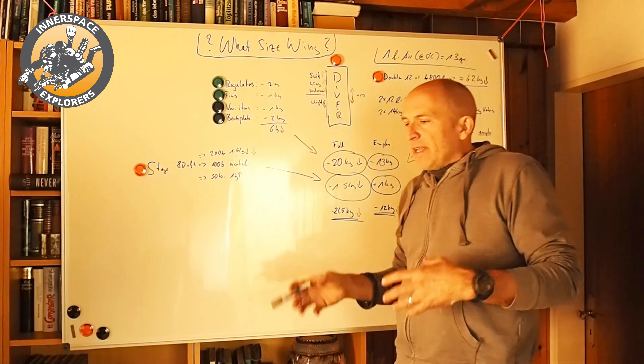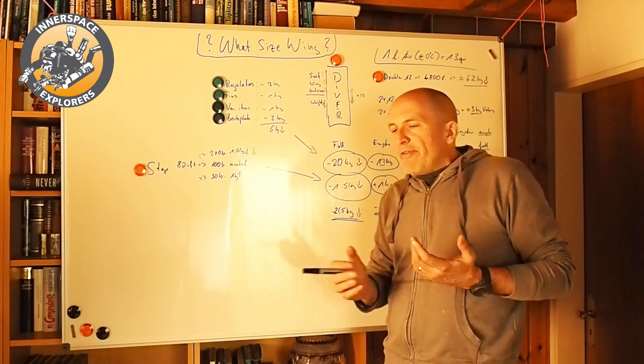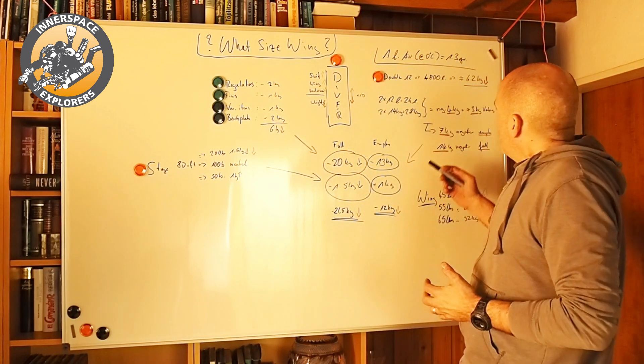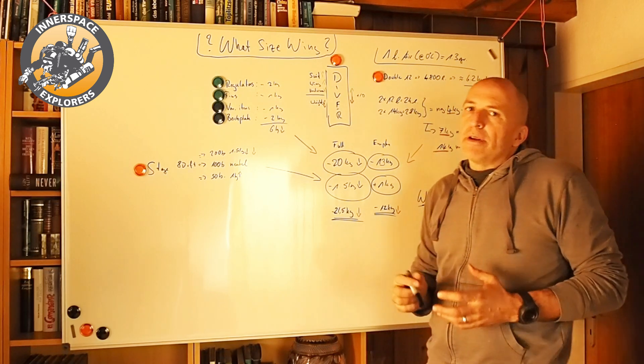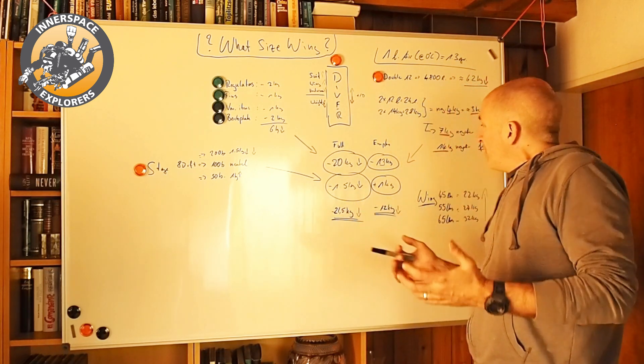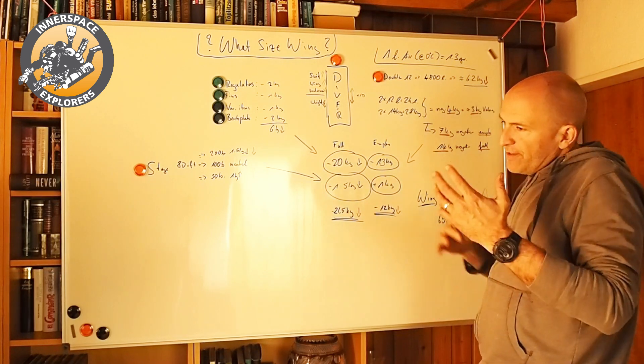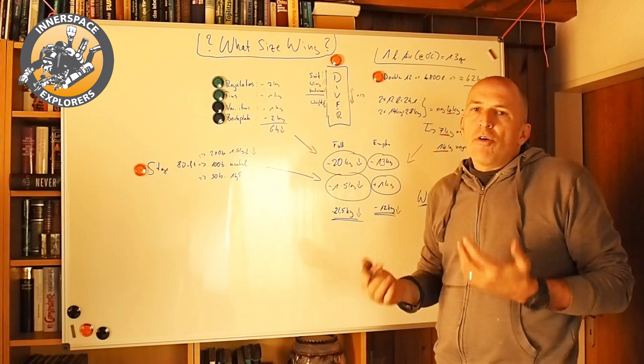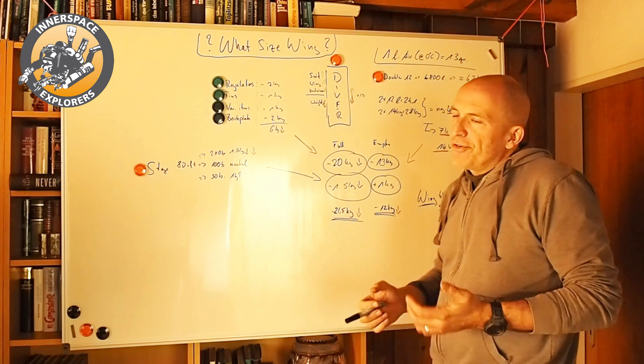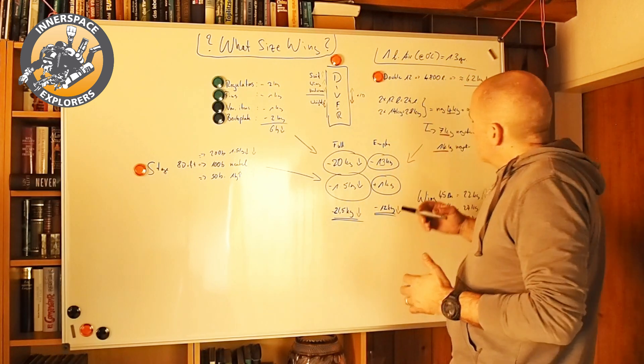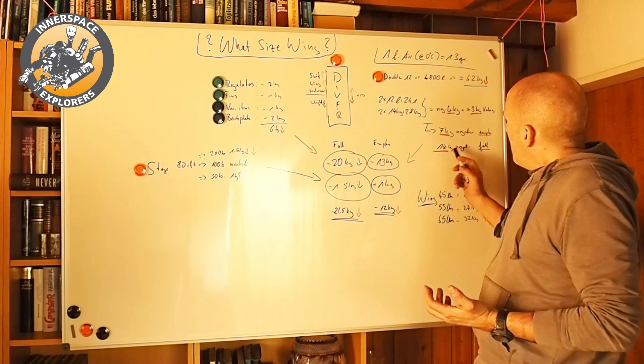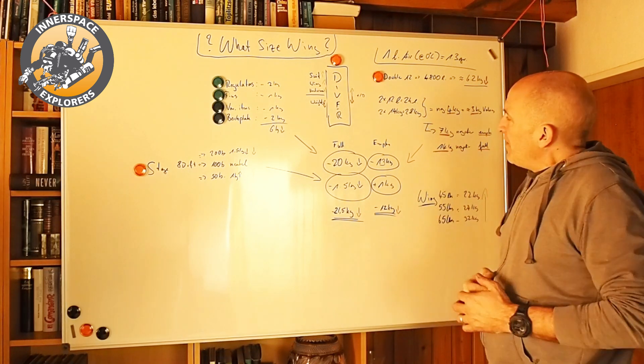So then we have the manifold and the stainless steel bands with the bolts. That's roughly another 3 kilos. So we can say that our double 12 empty is about 7 kilograms negative. So if I fill it up, we have 6 to 7 kilos more depending on how much you fill. This is calculated for 200 bars. Maybe you have 230 or something like that. So let's round it up. So that means we have 14 kilos negative if it's full.